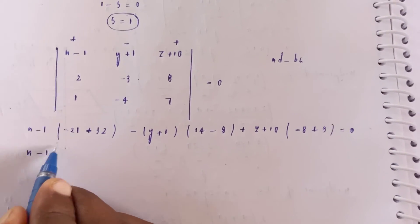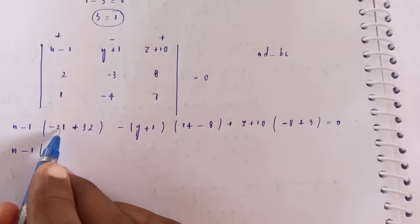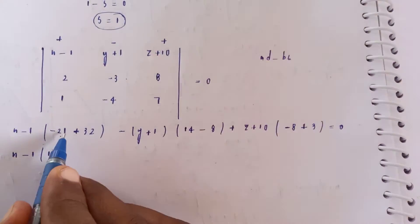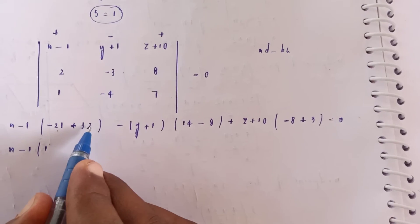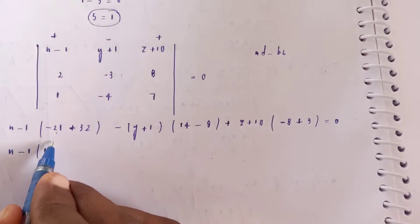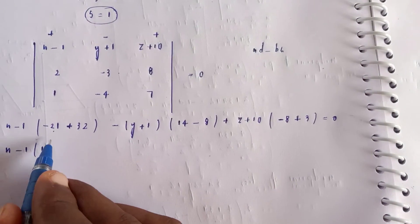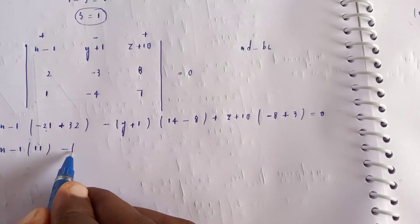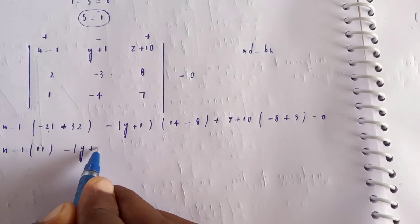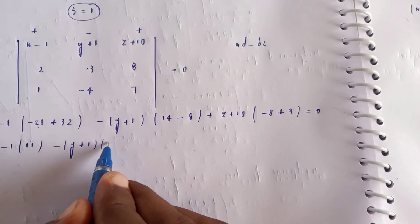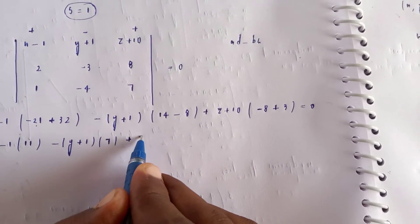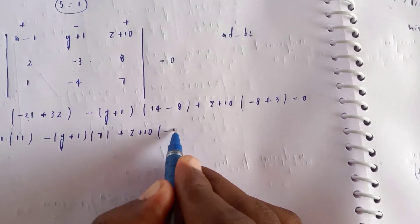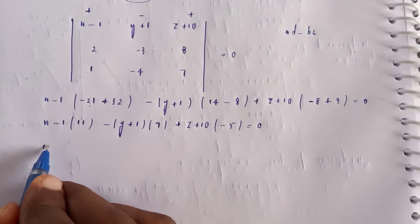Expanding: 11(x−1) gives 11x − 11. For the y-term with cofactor and second row calculation: 7(y+1) gives 7y + 7. For the z-term: −5(z+10) gives −5z − 50. Combining: 11x − 11 + 7y + 7 − 5z − 50. Simplifying: 11x + 7y − 5z − 50 = 0 (adjusting signs). So the plane equation is 11x − 7y − 5z − 50 = 0.